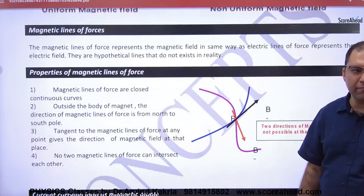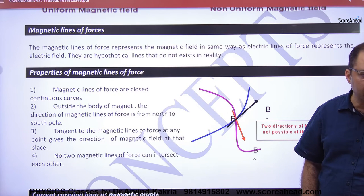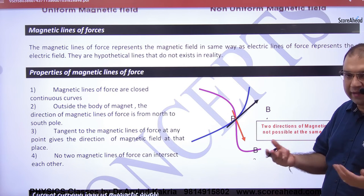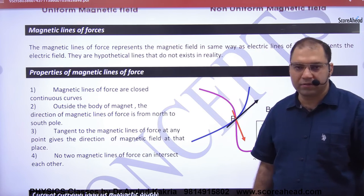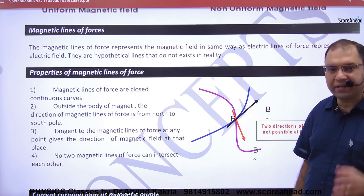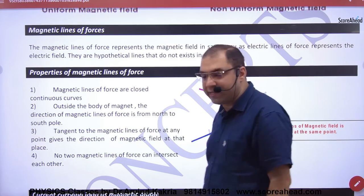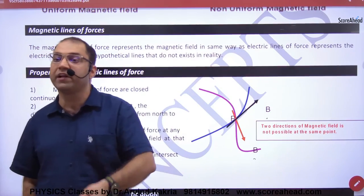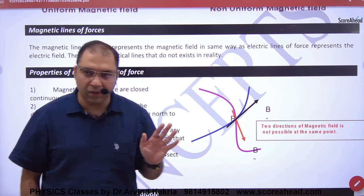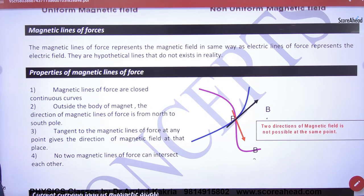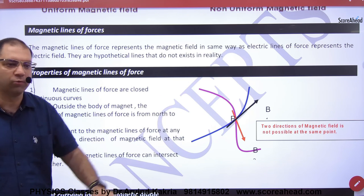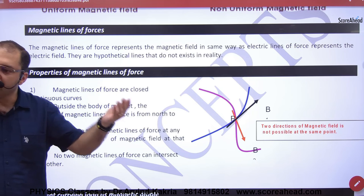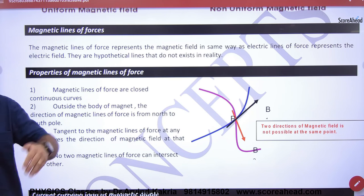Magnetic lines of force ki hai bilkul waisi jaisi electric lines of force hai. Magnetic lines of force kya hai? Imaginary lines hai, woh ek path hai - curve, tedha, medha, seedha, kaisa bhi sakta hai - such that agar aap koi point lein uspe or tangent draw karen uspe, that tangent will give direction of magnetic field at that point. Aise kiya tha usse electric field, usse magnetic field. Ismein ek property ka farak hai electric field or ismein: yeh line north se start hoti or south pe khatam hoti hai. Waha positive se start hoti thi or negative pe khatam hoti thi. Yeh north se start, south pe khatam.